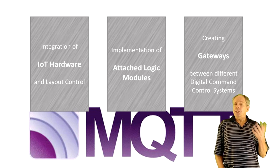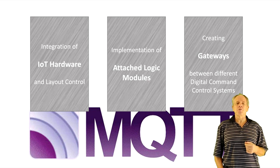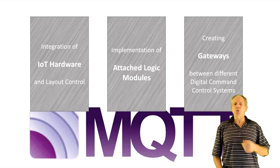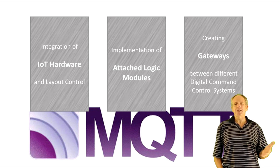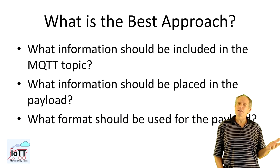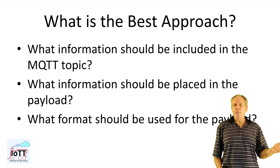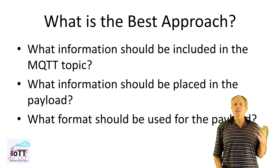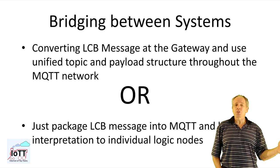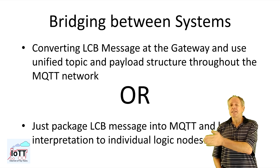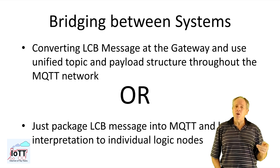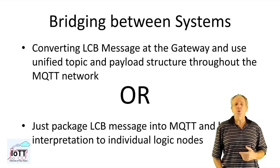The third area of advantages — bridging between systems — has not triggered that many comments so far. It seems bridging to other systems like home automation is currently more popular than bridging to other digital command control systems. However, at the core it is the same: a simple translation of topics and payloads of one system to topics and payloads of the other system, and vice versa. Which brings us back to the original question: what should be part of the topic and what should be part of the payload? Essentially this comes down to whether it is better to translate system messages into a universal language at the gateway and use a model railroad Esperanto within the MQTT network, or to keep the raw messages of the original digital command control system packed into an MQTT payload and leave interpretation to the individual function nodes.